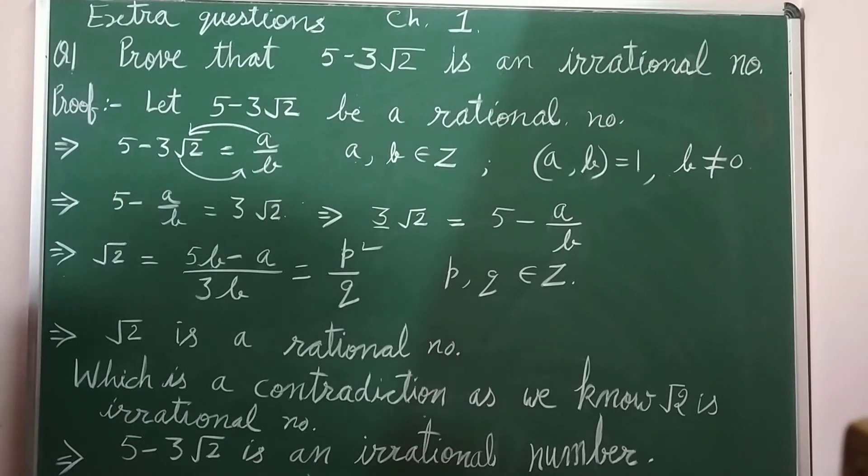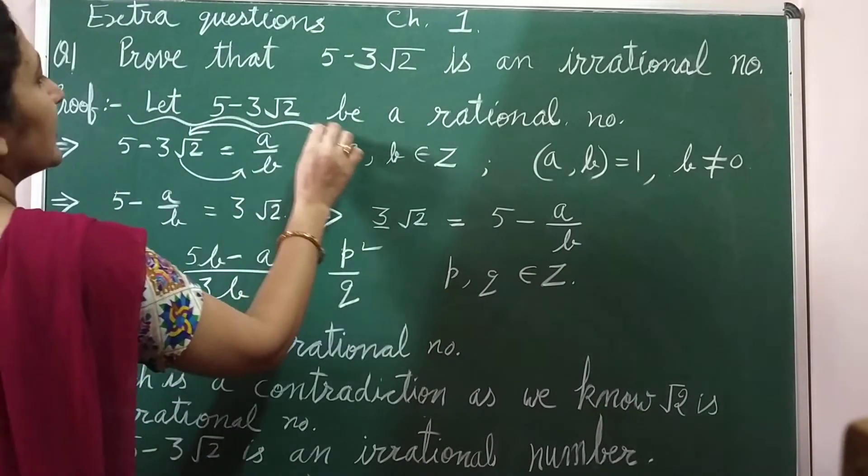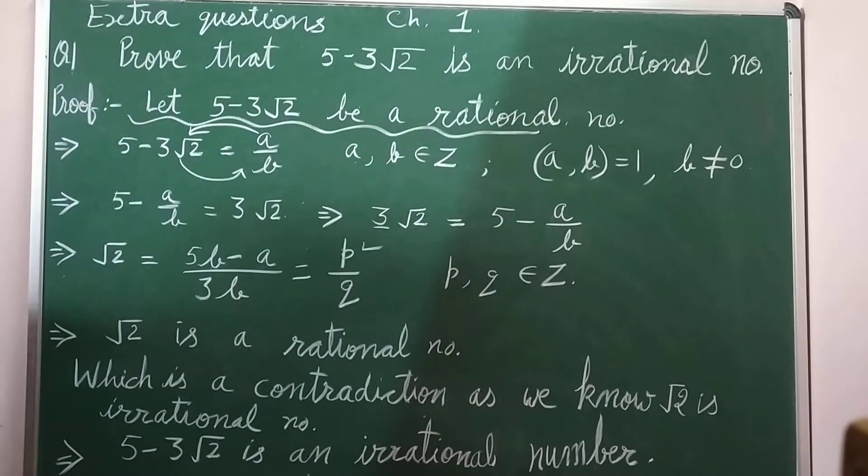Which is a contradiction. From here we are getting root 2 is a rational number, but we know root 2 is not a rational number, it is an irrational number. It means whatever we have supposed in the starting, that let it be a rational number, that supposition was wrong.